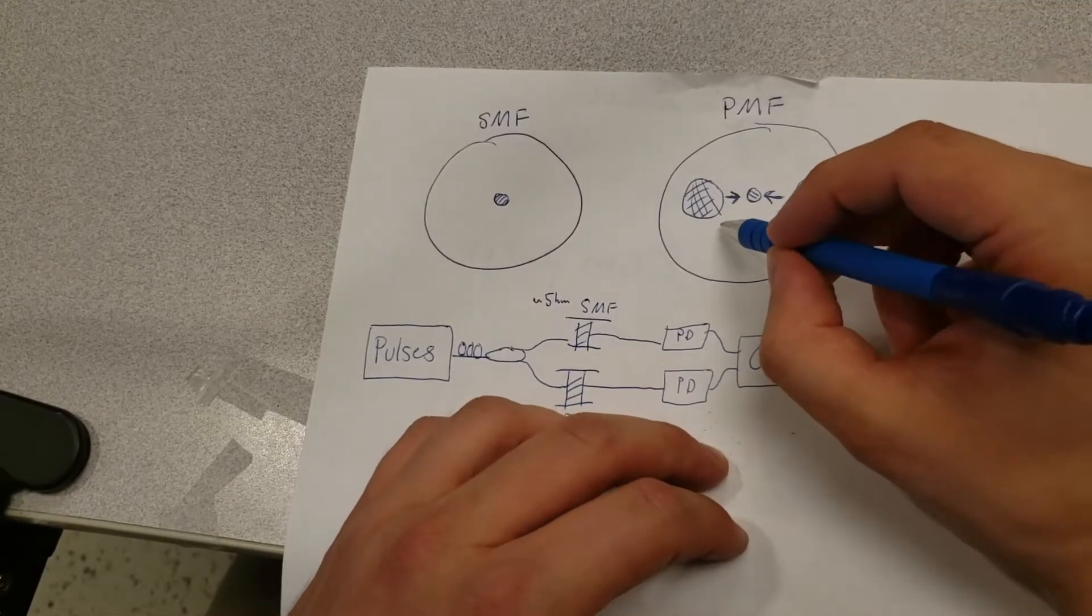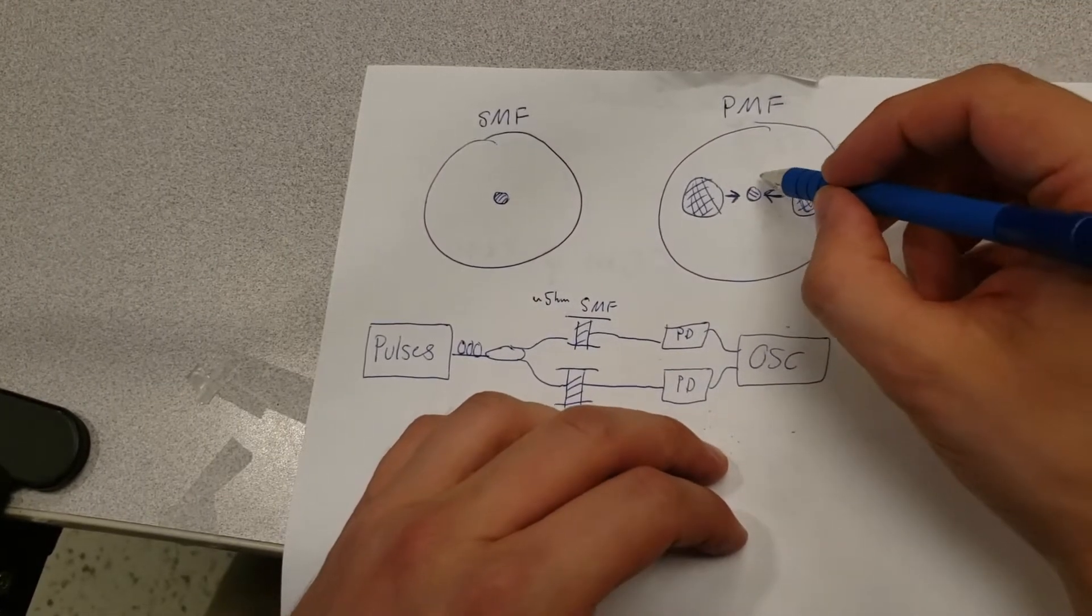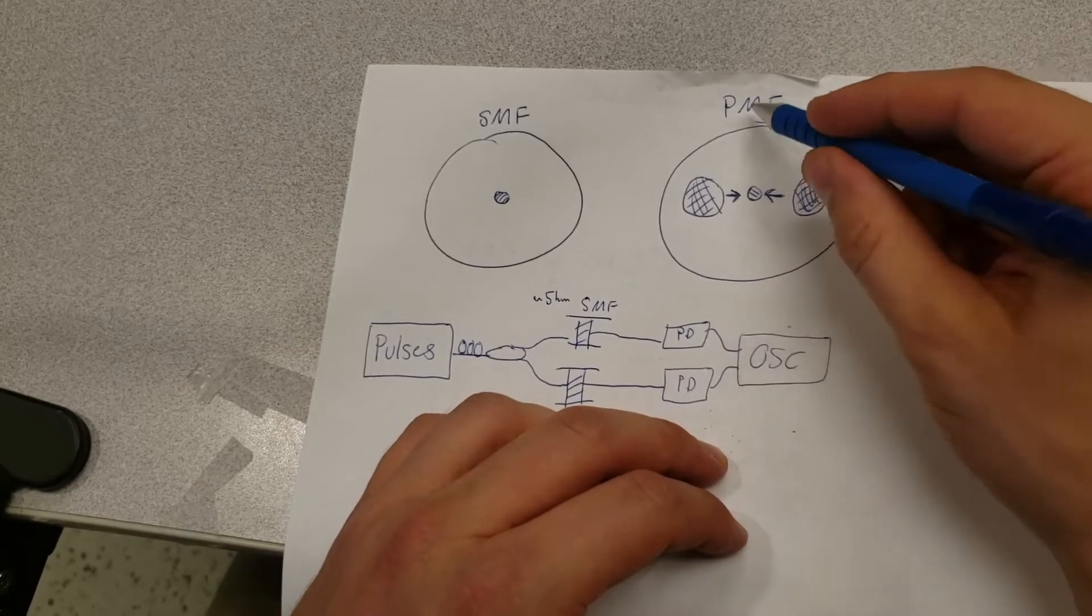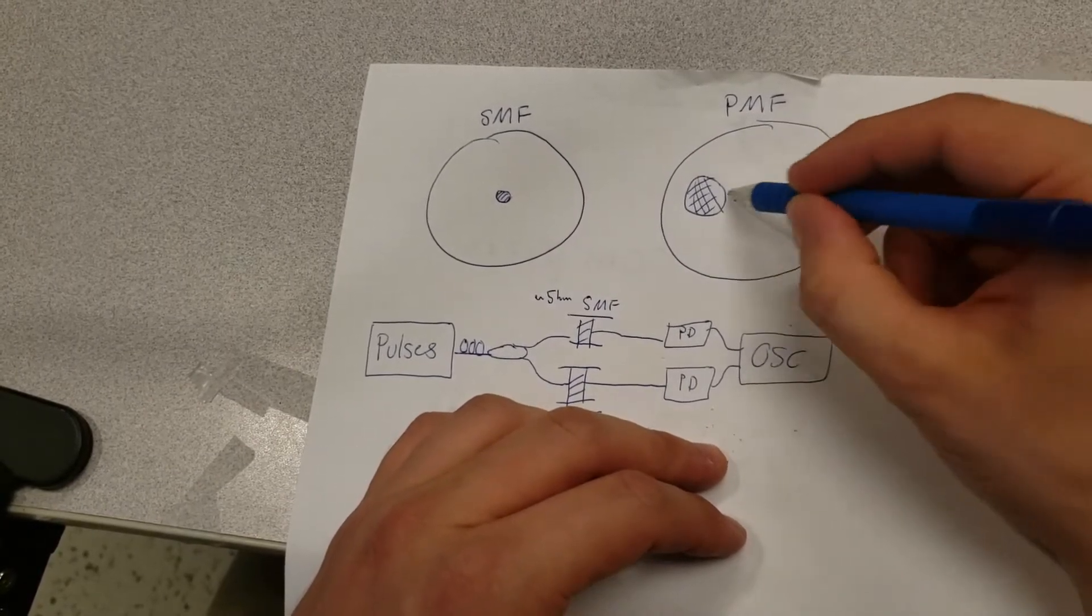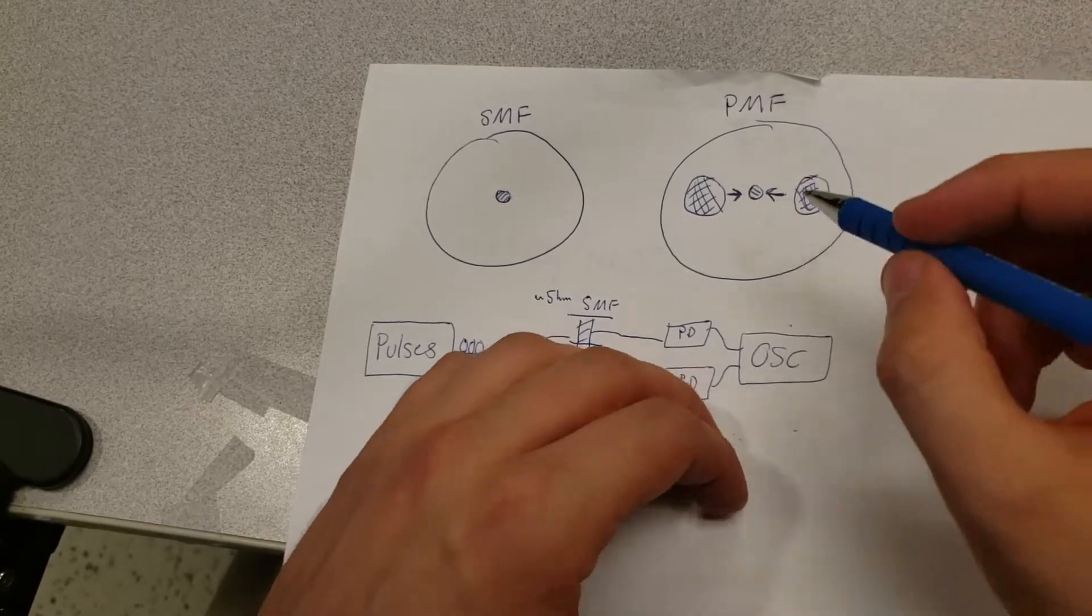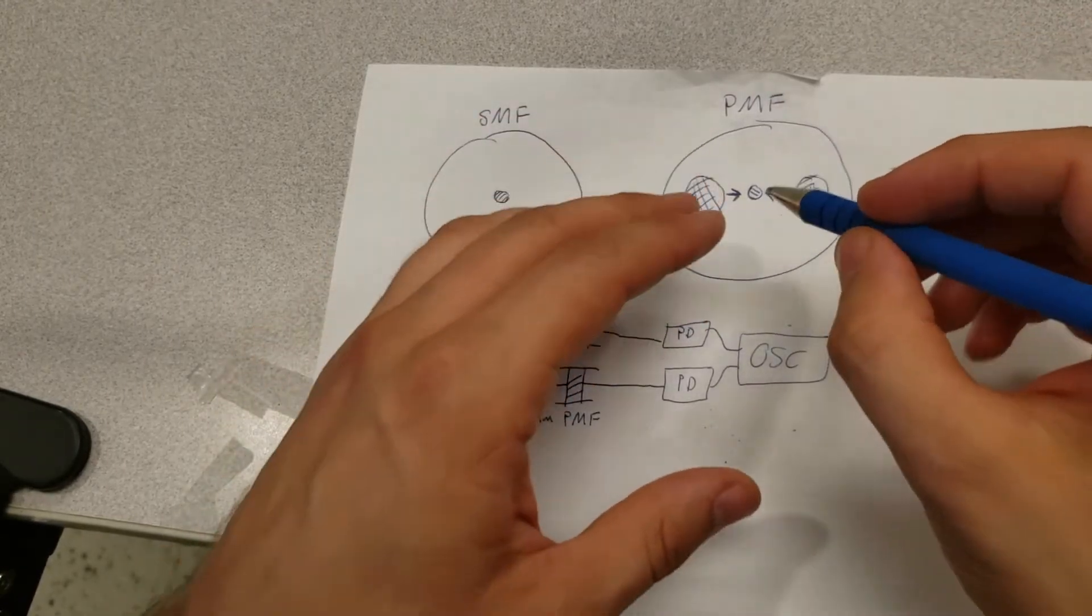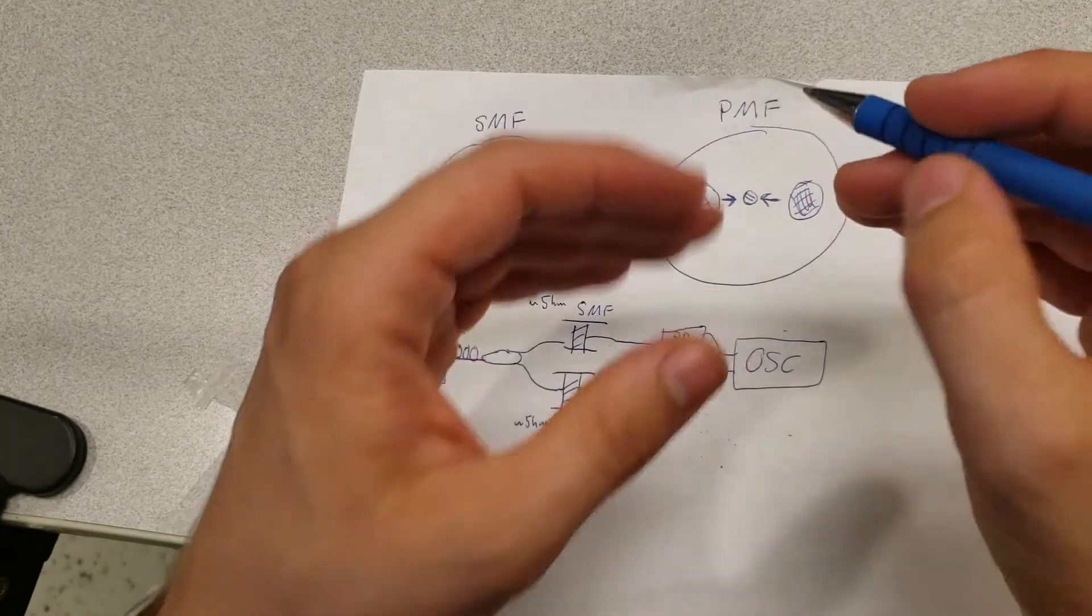If you send light in at a 45 degree angle, the component that's in the vertical direction will propagate faster than the one going in the horizontal direction, and if you have a sufficiently long fiber you can actually get a pulse to split into two components.